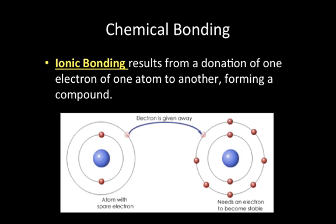Ionic bonding results from the donation of one electron from one atom to another, forming a stable compound. Lithium wants to donate an electron and fluorine wants to gain one to become stable. By lithium giving that electron to fluorine, they form a chemical bond and become the compound lithium fluoride. So ionic bonding results from the donation of an electron from one atom to another to form a chemical compound.